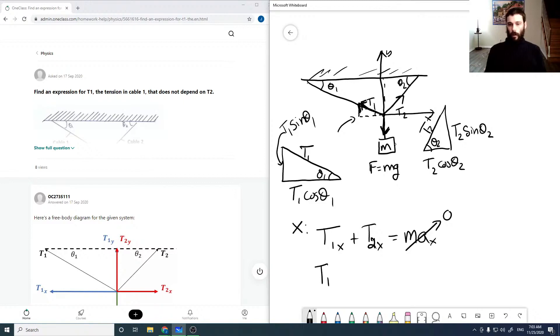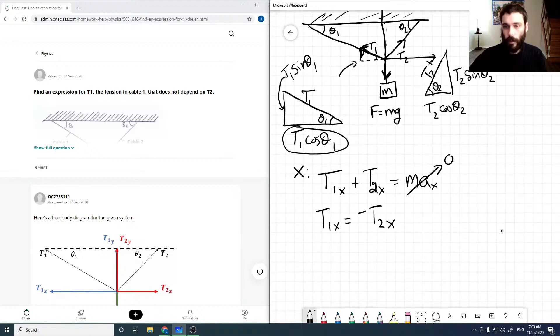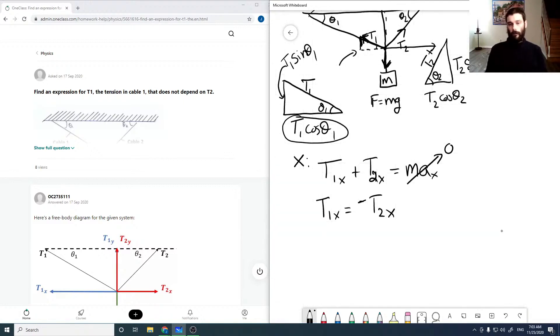And so T1x has to equal minus T2x, and these are all signed quantities. So in the axis system I've drawn here, the x component of our T1 is this T1 cos theta 1, but it has to be minus T1 cos theta 1 because it acts in the negative direction. So we have minus T1 cos theta 1 is equal to minus, and our x component of our T2 is T2 cos theta 2 from our similar triangles.